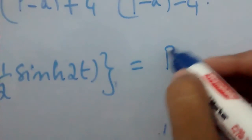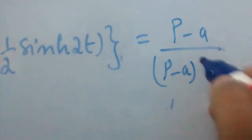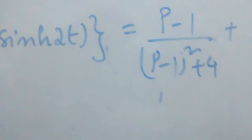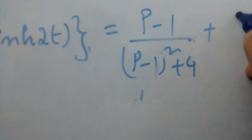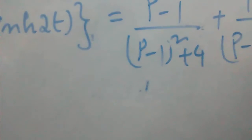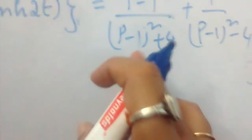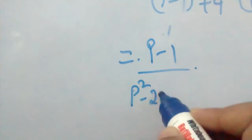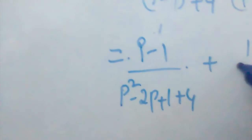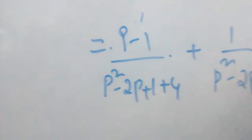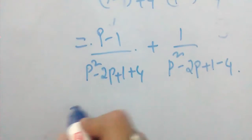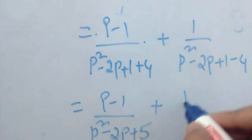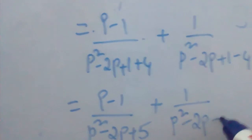We can leave the answer here or simplify further. After simplifying: (p - 1)² = p² - 2p + 1. So we get (p - 1) / (p² - 2p + 1 + 4) + 1 / (p² - 2p + 1 - 4), which equals (p - 1) / (p² - 2p + 5) + 1 / (p² - 2p - 3). This is our required solution.